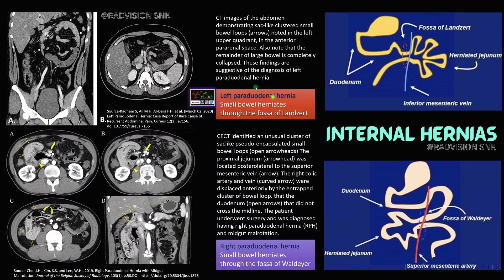Next we will see a few internal hernias. Here you can see a sac of abnormal bowel loops on the left side of the abdomen, anterior to the kidney — this is a left paraduodenal hernia, which commonly occurs through the fossa of Landzert, where small bowel loops herniate. Here you can see abnormal bowel loops on the right side — jejunal loops posterolateral to the superior mesenteric vein, with arrows depicting the right colic artery and vein. This is right paraduodenal hernia, which occurs through the fossa of Waldeyer. Remember: left paraduodenal hernia through the fossa of Landzert, and right paraduodenal hernia through the fossa of Waldeyer.